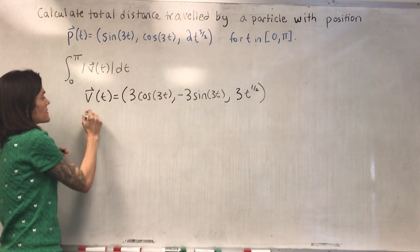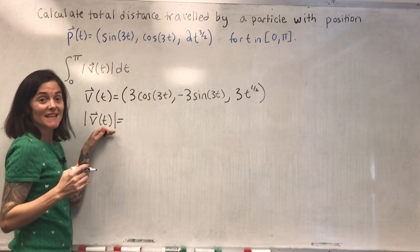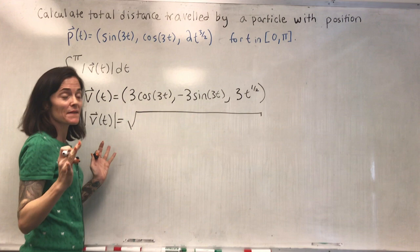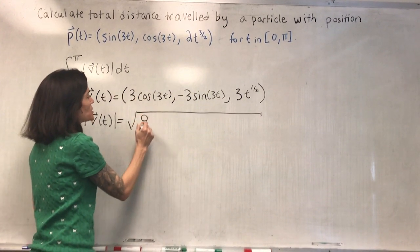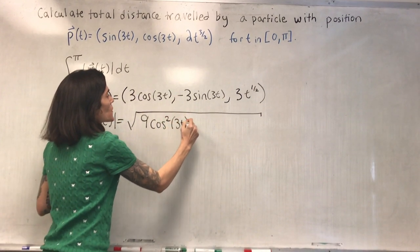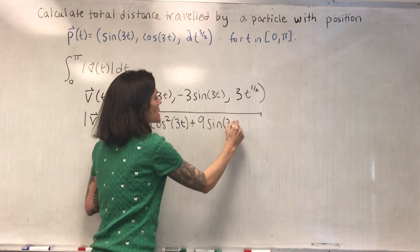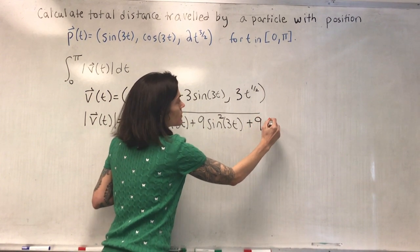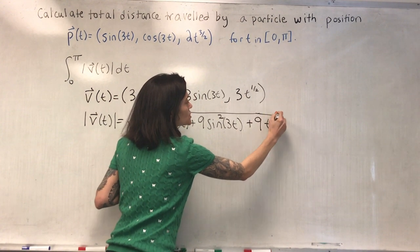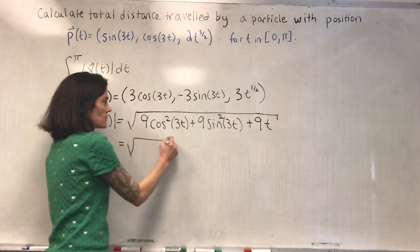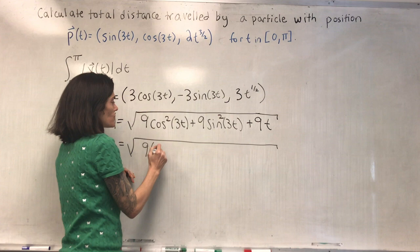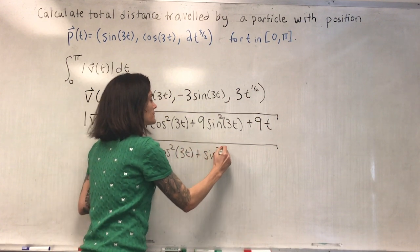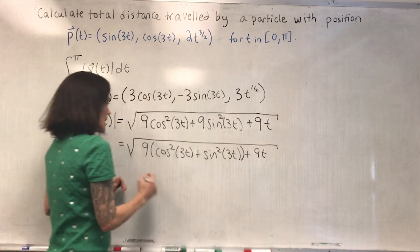And then we calculate the length or magnitude. This is going to give us the speed. We take a square root. We take each component squared and add them up. It's the length in Euclidean space, or magnitude of the vector. This will be nine cosine squared three t plus nine sine squared three t. And then when we square the last term, we get a nine. t to the one half squared is just t.